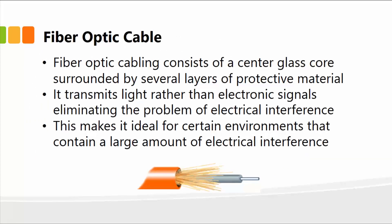The next type of cable is the fiber optic cable. This consists of a central glass core surrounded by several layers of protective material. It transmits light rather than electronic signals, eliminating the problem of electrical interference. With fiber optic cable, we're not worried about attenuation problems, making it ideal for environments with large amounts of electrical interference — such as an electronic factory with nothing but electronic signals. Fiber optic cable would be the best possible solution.